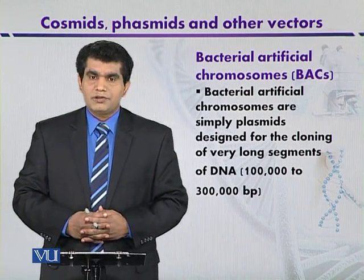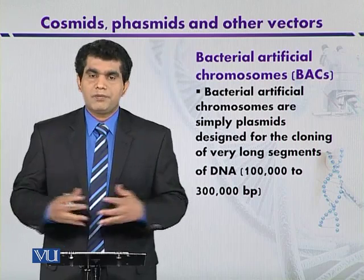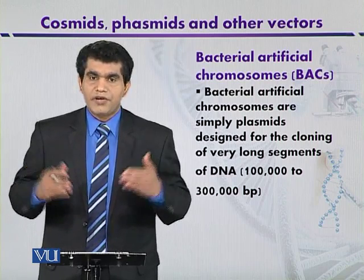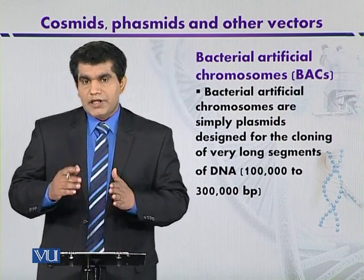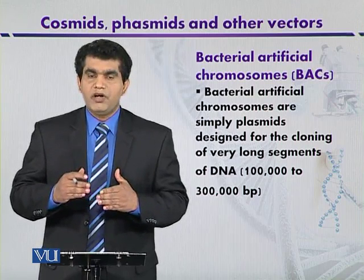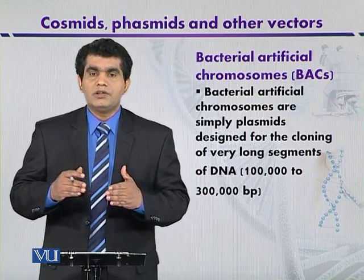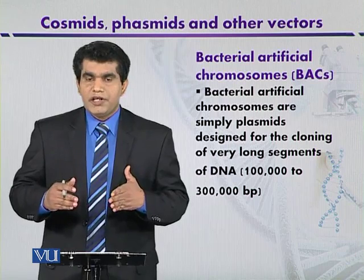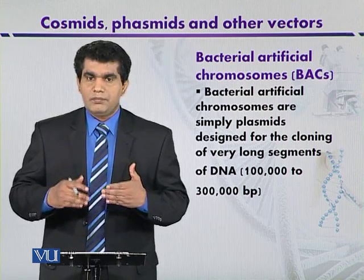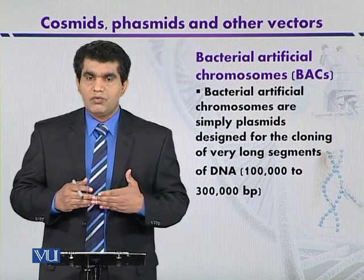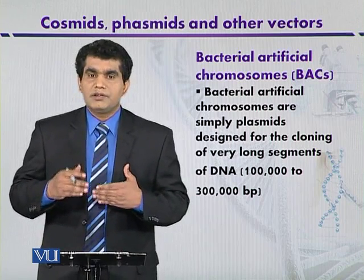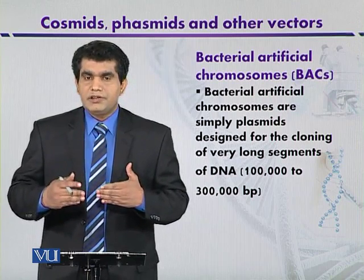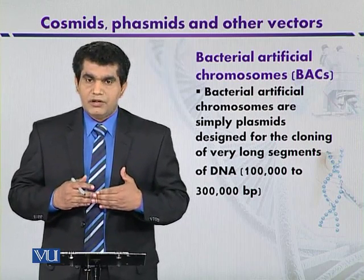Bacterial artificial chromosomes (BACs) are a type of plasmid used to clone very large DNA fragments. The size of the foreign DNA fragments may be 100,000 to 300,000 base pairs. Simply, we can say that the maximum size of foreign DNA which we can clone in BACs is 100,000 to 300,000 bp. These BACs are bacterial artificial chromosomes.